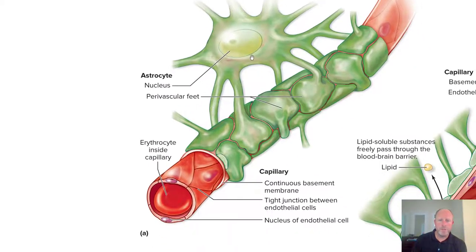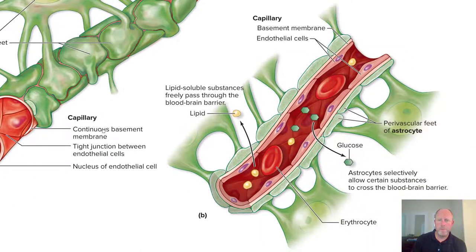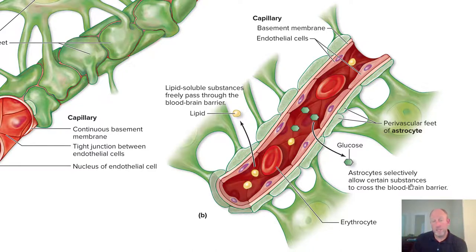The image of the blood-brain barrier shows the astrocyte wrapped around the capillary, an erythrocyte (red blood cell) inside the capillary, a continuous basement membrane, tight junctions between endothelial cells, the endothelial cell nucleus, and the perivascular feet of the astrocytes along the capillary. Lipid-soluble substances freely pass through the blood-brain barrier, as does glucose, while astrocytes selectively allow certain other substances to cross.